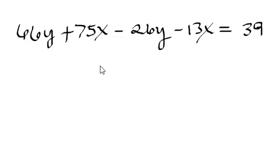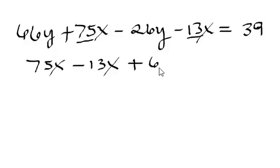Alright, doing this one just a tad bit different. Let's go ahead and get all our X's together. So we have 75X minus 13X plus 66Y minus 26Y is equal to 39.